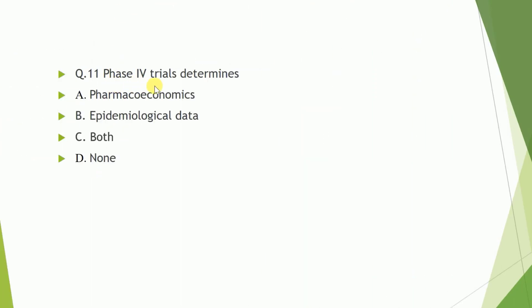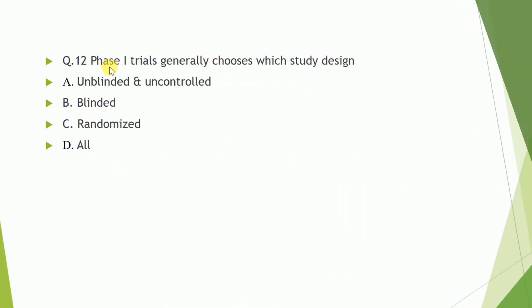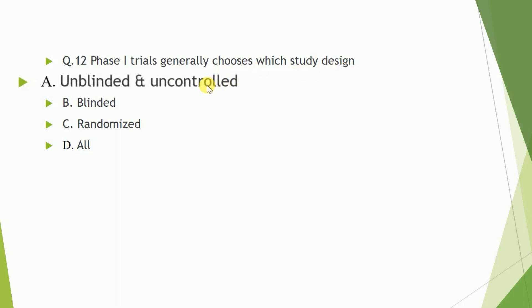Question number eleven: phase four trial determines what? And question number twelve: phase one trial chooses which study design? Phase one trial chooses unblinded and uncontrolled trial.